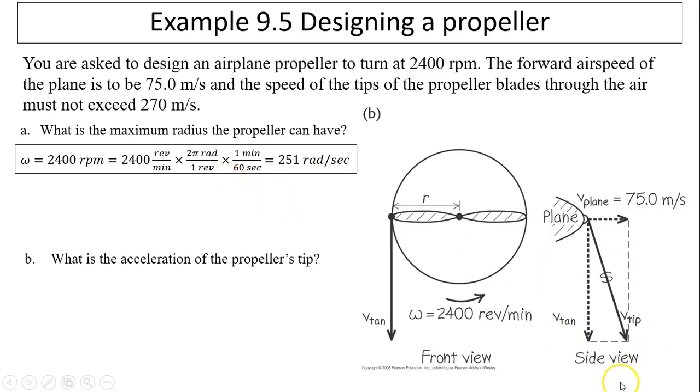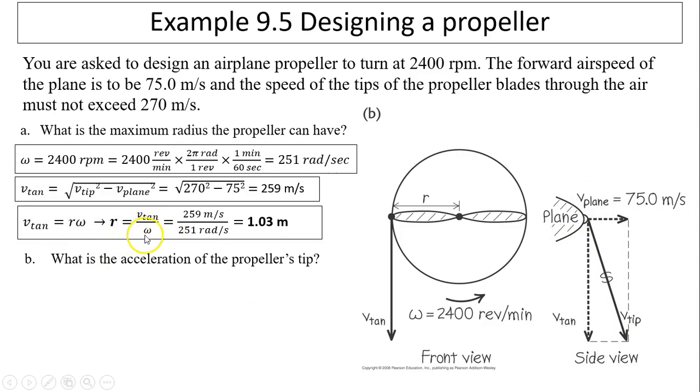Next one, as you can see the side view. This is v_tan. We don't really know. What we're given is the tip. V_tip is 270 meters per second. Remember, the propeller is moving in a spiral motion, going forward like this. So this V_tip we know, we also know V_plane. From those two, we can figure out V_tan using Pythagorean theorem. V_tan is 259 meters per second. If we know V_tan, that's your linear speed, rotational speed. V_tan equals R times omega. We can figure out R equals 1.03 meters. That is the maximum radius the propeller can have.